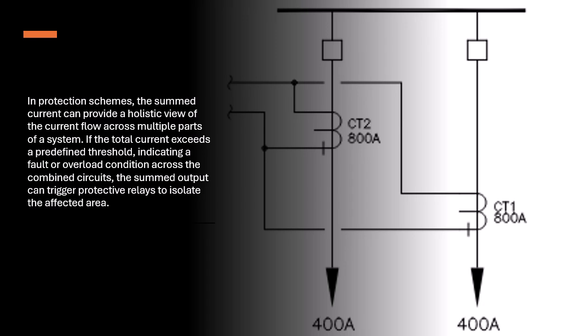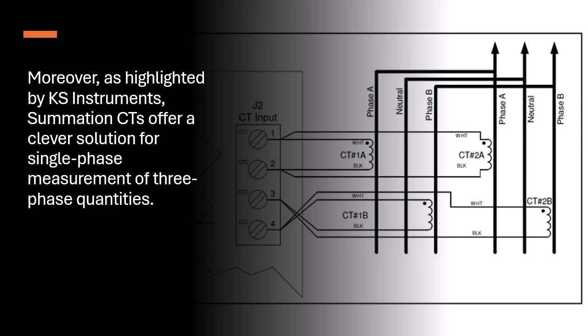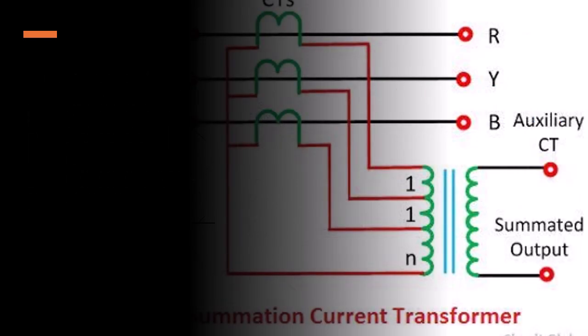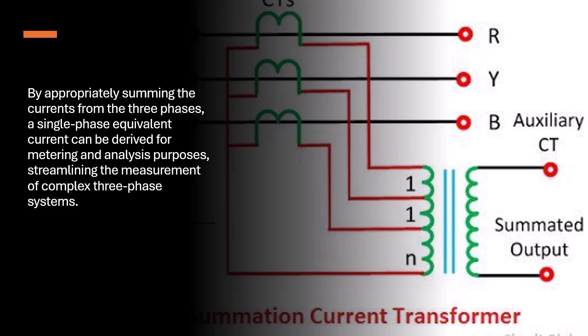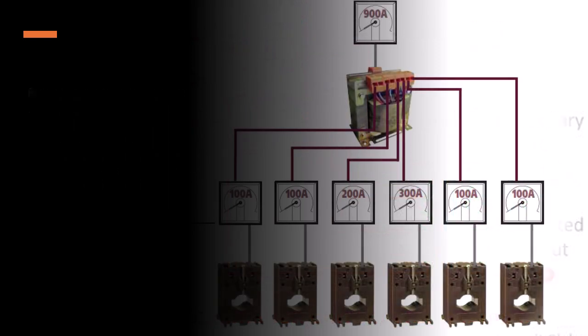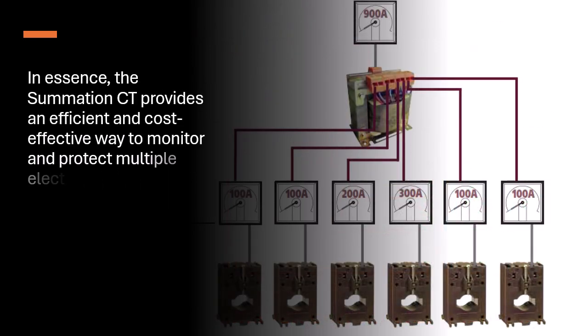As highlighted by KS Instruments, summation CTs offer a clever solution for single-phase measurement of three-phase quantities. By appropriately summing the currents from the three phases, a single-phase equivalent current can be derived for metering and analysis purposes, streamlining the measurement of complex three-phase systems. In essence, the summation CT provides an efficient and cost-effective way to monitor and protect multiple electrical circuits collectively.